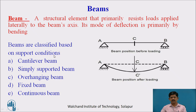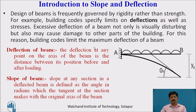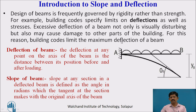Beams are classified based on their support conditions. So why do we require slope and deflection? The design of a beam is frequently governed by rigidity rather than strength. Every building code specifies limits on deflection as well as stresses, because excessive deflection is not only visually disturbing but may also cause damage to other parts of the building. Each building code limits the maximum deflection of a beam.